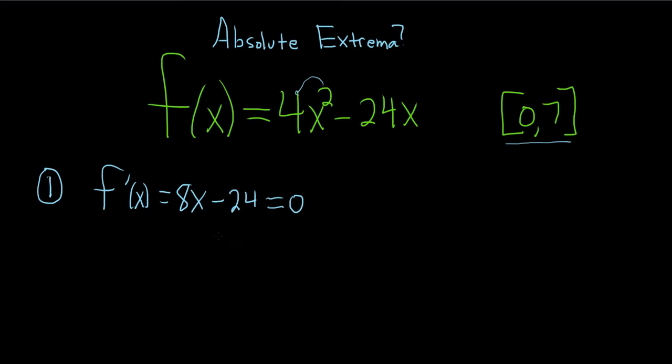So to solve this for x, we can add 24 to both sides. So plus 24, plus 24. So you have 8x equals 24. And it looks like we can divide by 8 now. So divide by 8, divide by 8. So we have x equals 3.